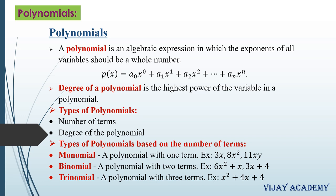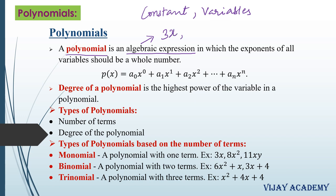Before going to the definition of polynomial, let us know what is the meaning of an algebraic expression. An algebraic expression is the combination of constants and variables connected by fundamental operations. Constants are the fixed values and variables which have various values. For example, 3x is an algebraic expression because 3 and x are connected by multiplication, and it consists of one term.